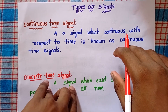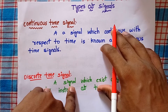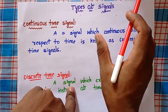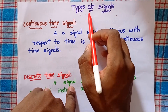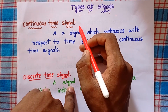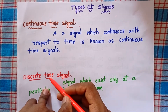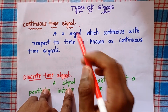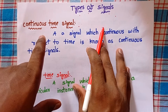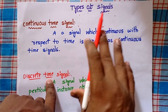Hi friends, in the last video we discussed about what is signal and what is system. In this video we will go to see the two main types of signals. The signals are classified on these types only. These are the two types: one is continuous time signal, and another one is discrete time signal. We will go to see what is continuous time signal, what is discrete time signal, and their examples in this video.